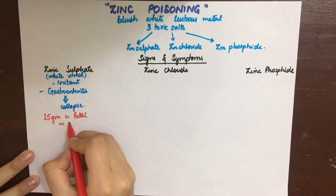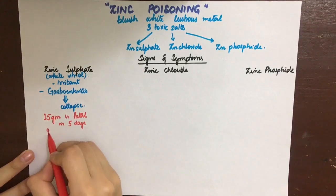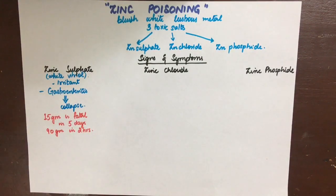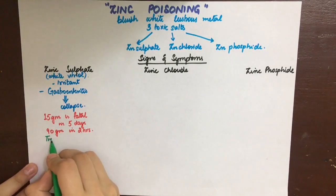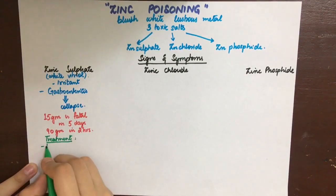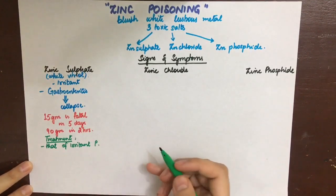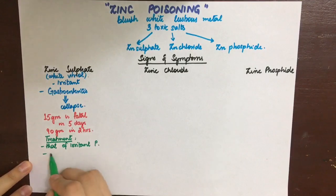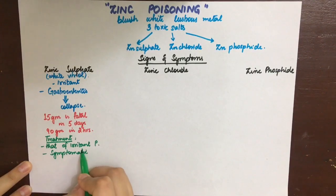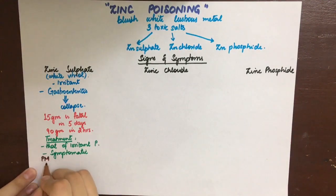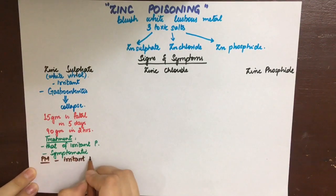Regarding the fatal dose and fatal period: 15 grams of zinc sulfate will cause death in five days, while 90 grams will cause death in two hours. Treatment of zinc sulfate poisoning is the same as that of an irritant poison — stomach wash should be done, there is no specific antidote, and sodium bicarbonate and demulcents are also indicated. The rest of the treatment should be symptomatic.